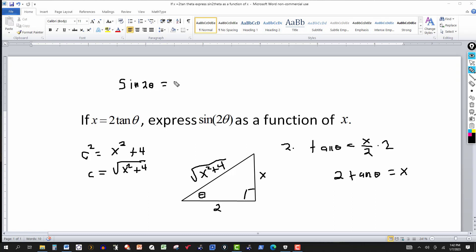So sine of 2 theta, we have an identity that states that's the same thing as 2 sine of theta cosine of theta.